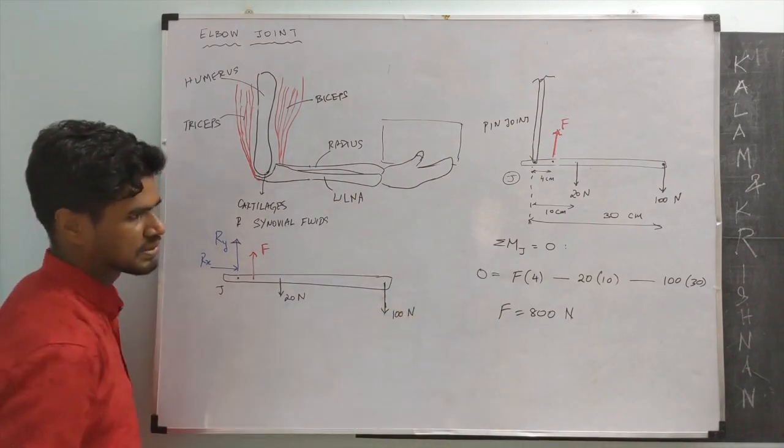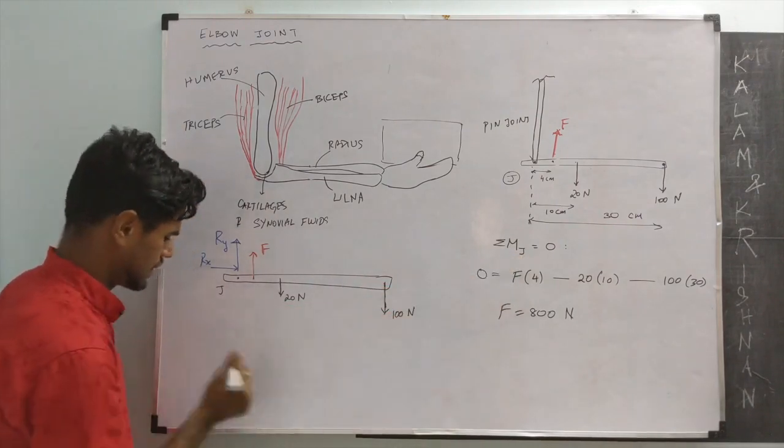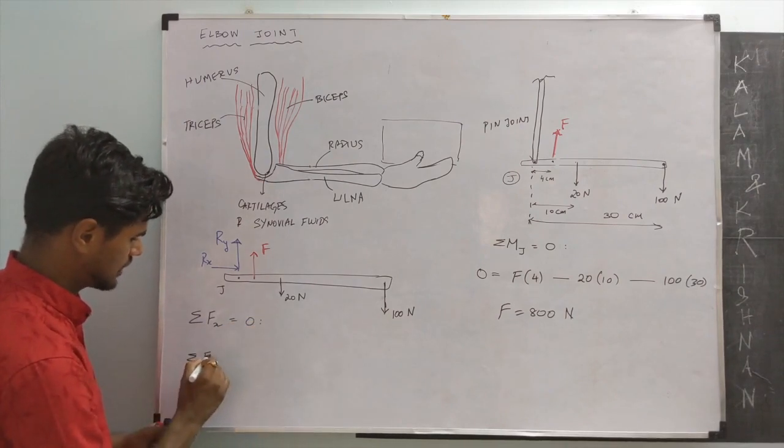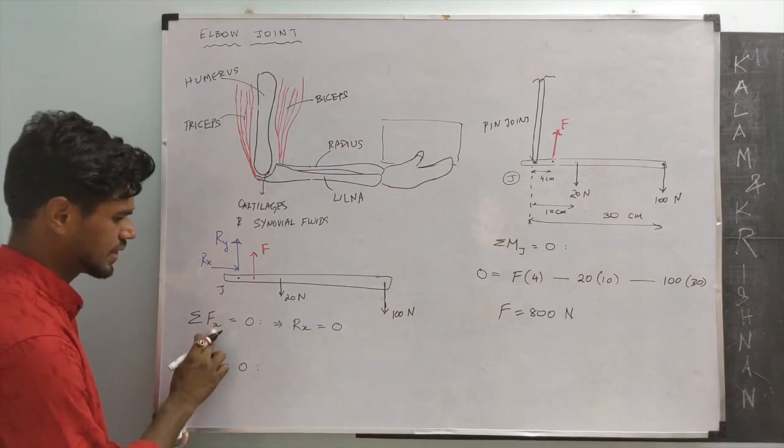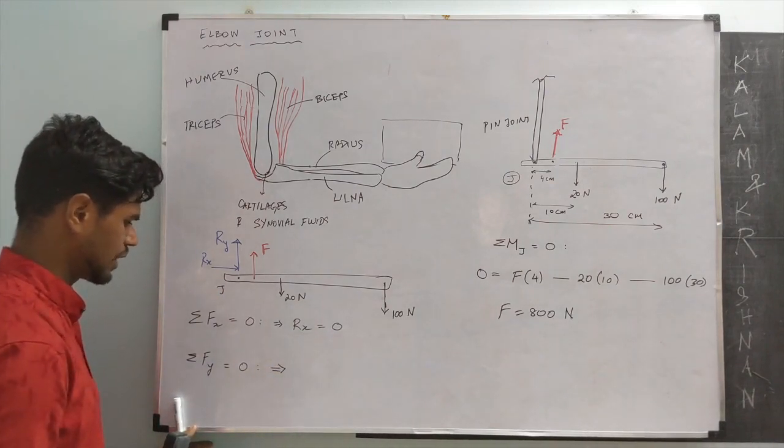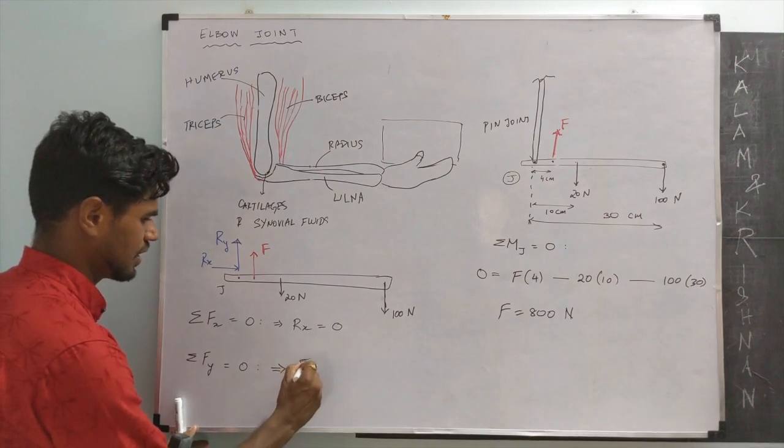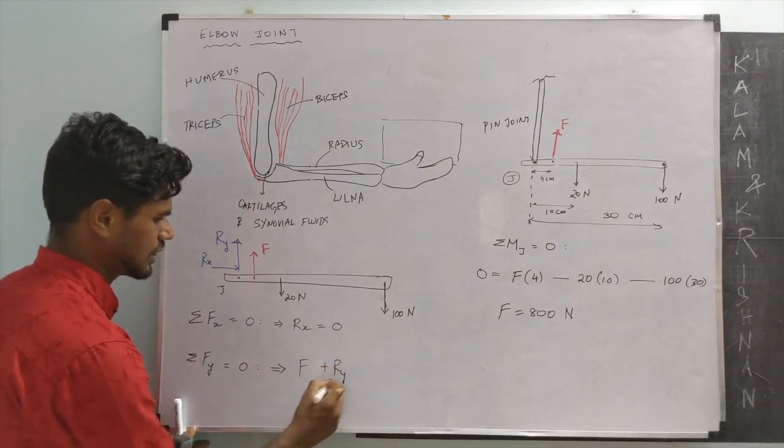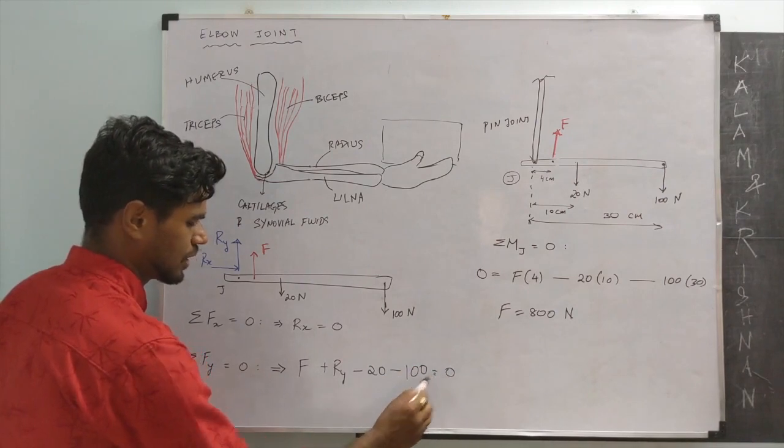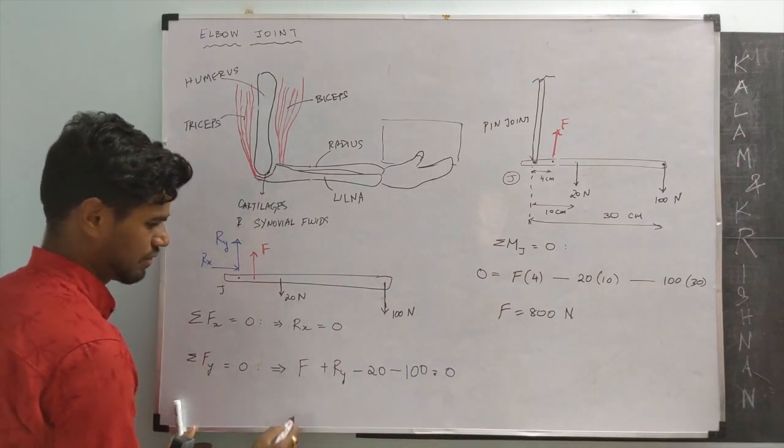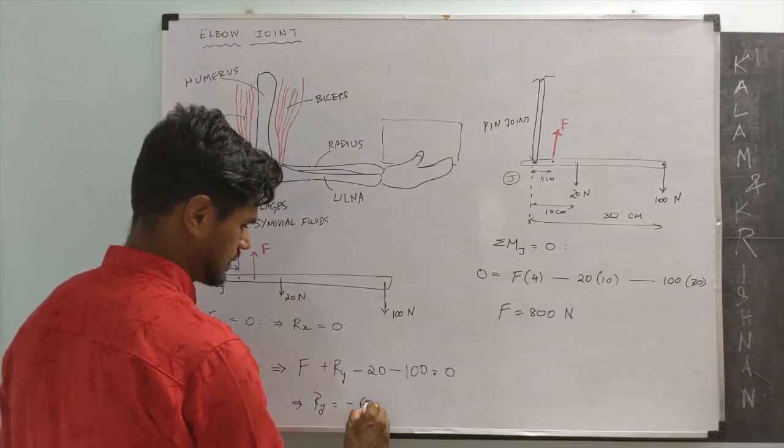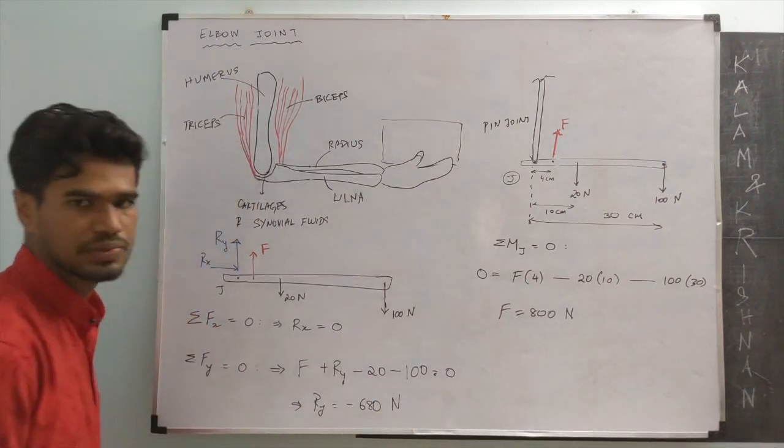We already used one: sum of moments above any point is 0. We chose point J. We have sum of forces in the x direction to be 0, sum of forces in the y direction to be 0. Sum of forces in x equal to 0 implies there is only one force Rx that is 0. Sum of forces in the y direction, we have F in the positive direction plus Ry in the positive direction minus 20 in the negative direction and minus 100 in the negative direction to be 0. We already know the value of F. From this we can calculate Ry to be minus 680 Newtons.